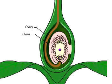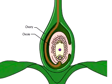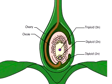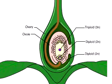This ovule has been fertilized and will become a seed. Each of its cells contains one or more sets of chromosomes, but the number of sets differs among the parts of the ovule. Double fertilization converts the large central cell from diploid to triploid, while the egg becomes a diploid zygote. The surrounding integuments remain diploid as they were before fertilization.